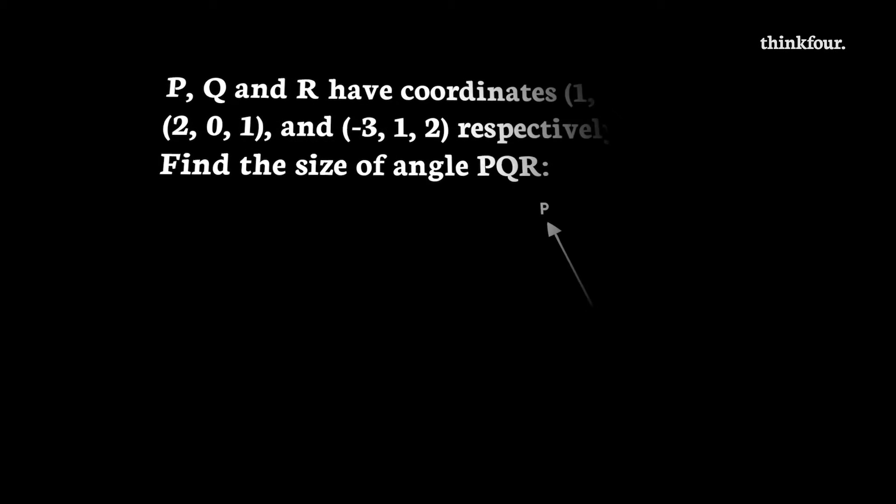In this next example, you are given three coordinates and told to find an angle. To do this, you will need to find two vectors. The diagram will help you determine which two vectors are needed.